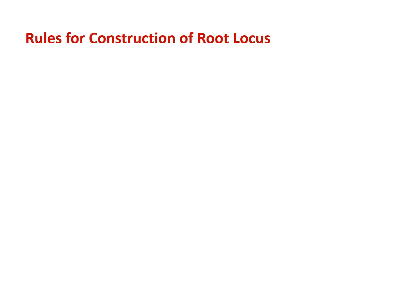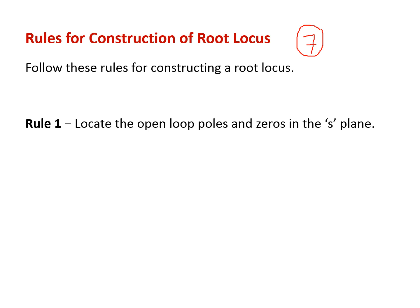Coming to the rules for constructing the root locus: we have seven rules in total. The first rule is to identify the open loop poles and open loop zeros using the given transfer function, and then indicate these poles and zeros on the s-plane.